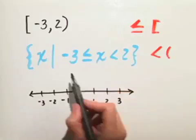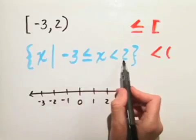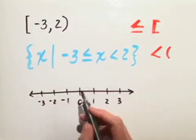We want x to be in this interval between negative 3 and 2, including negative 3, but not including 2.